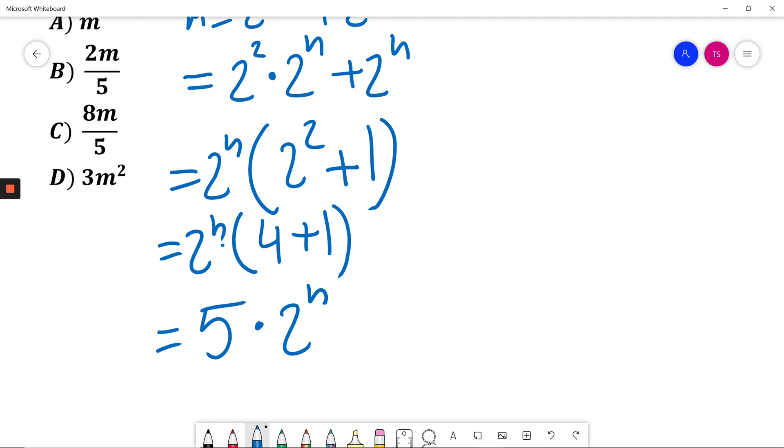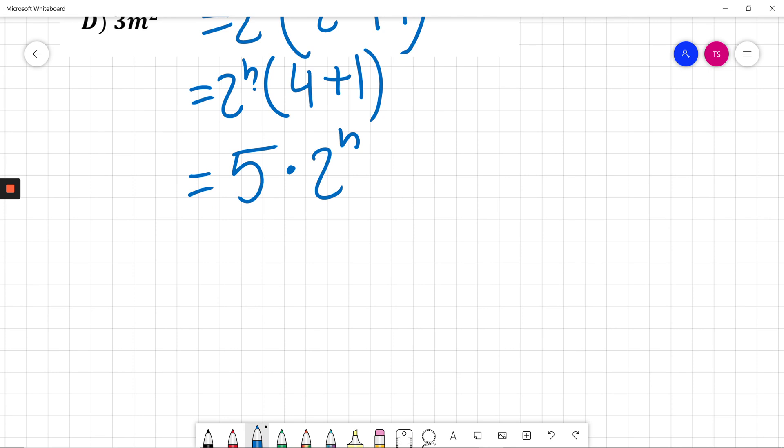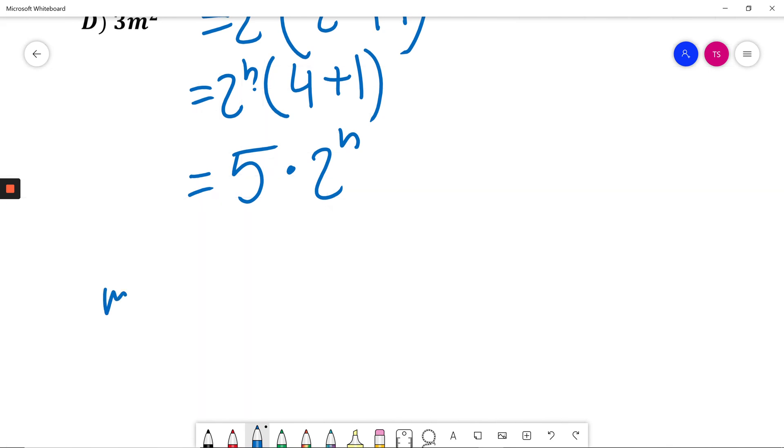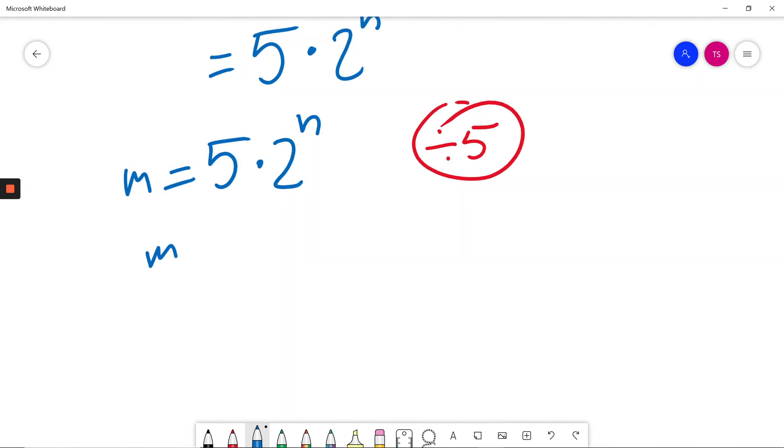So what I found, I found that m equals 5 times 2 to the power of n. At this moment I will divide both sides by 5. What will I get? I will get m divided by 5 equals 2 to the power of n.